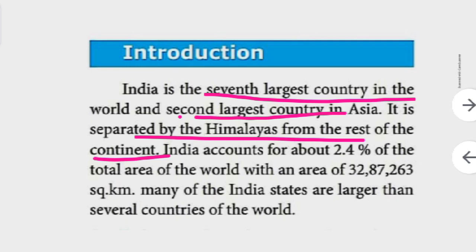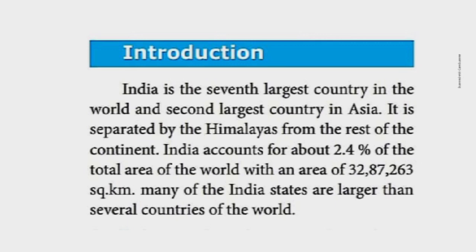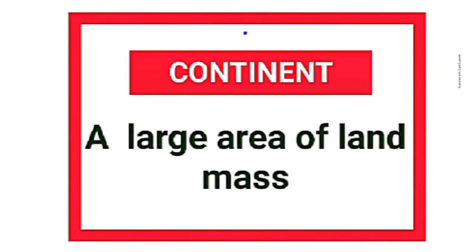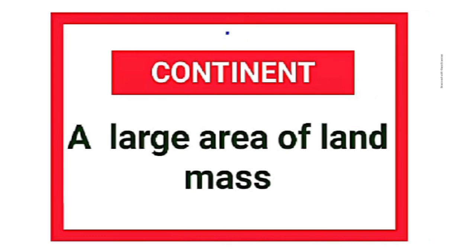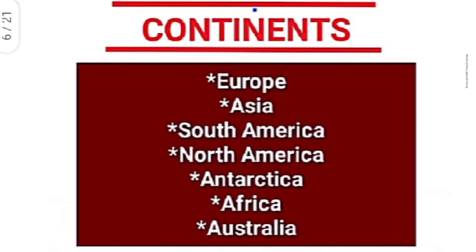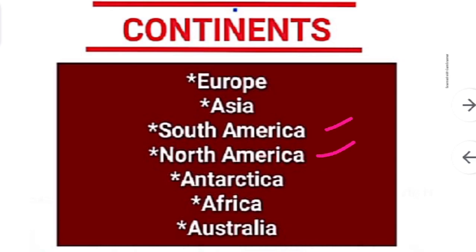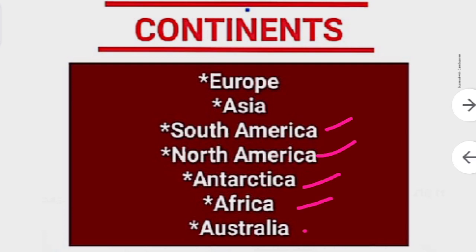A continent is a large land mass. There are nearly seven continents: Europe, Asia, South America, North America, Antarctica, Africa, and Australia. Likewise there are five oceans: Pacific Ocean, Atlantic Ocean, Arctic Ocean, Indian Ocean, and Antarctic Ocean.